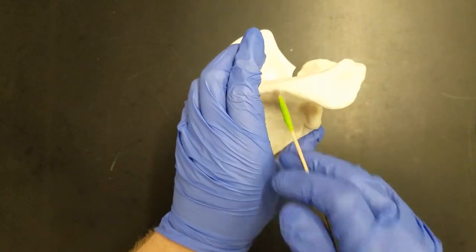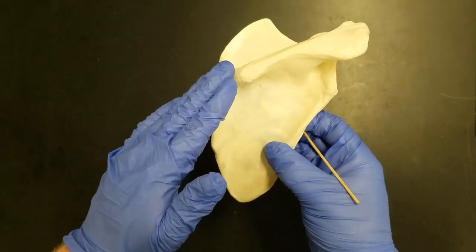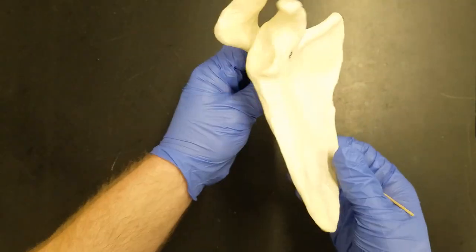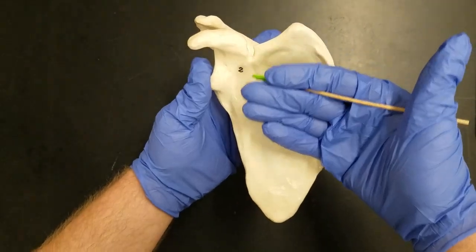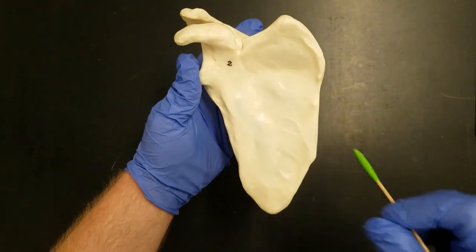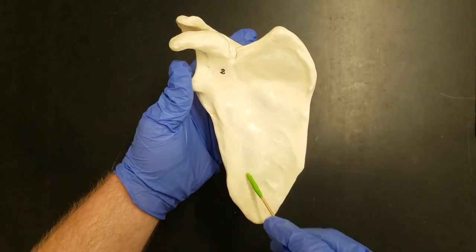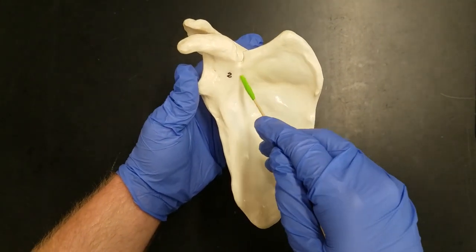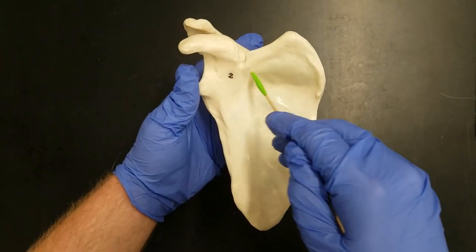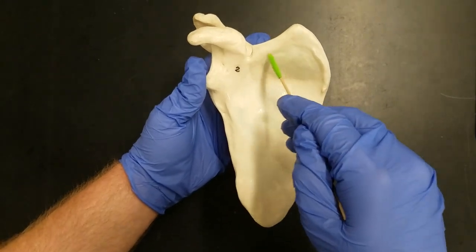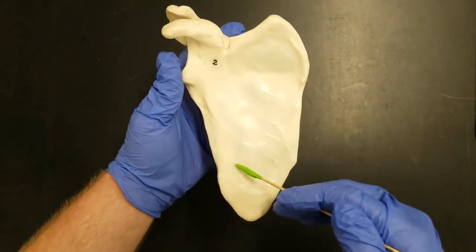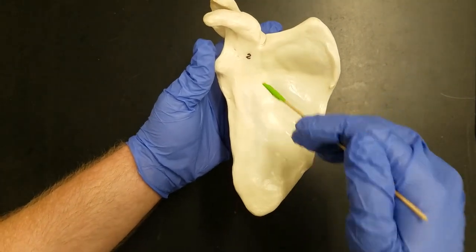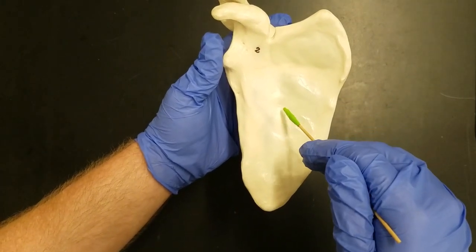This was the back, where the spine of the scapula was. We're going to turn it around and look at the anterior surface. This is the surface that sits up against the ribcage. Notice this very large depression on the front side of our scapula. This is the subscapular fossa. Sub means below, so this is below the scapula. It's on the front side. Our subscapularis muscle attaches here.